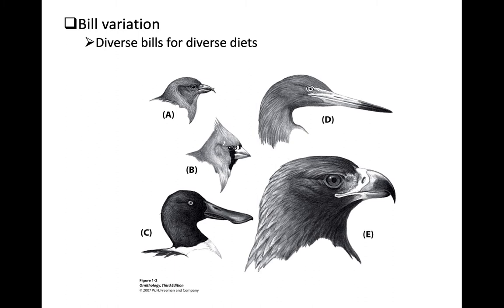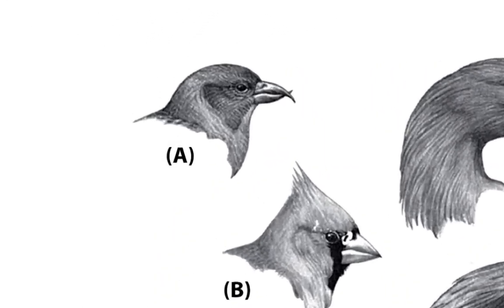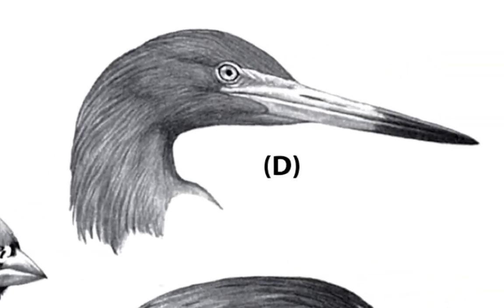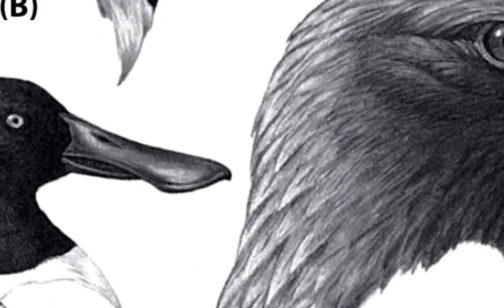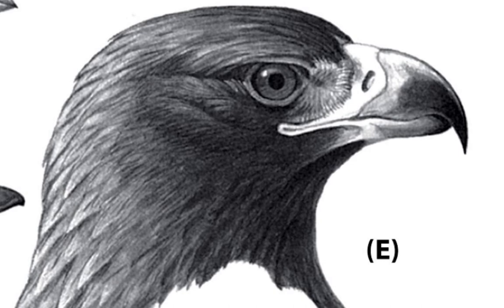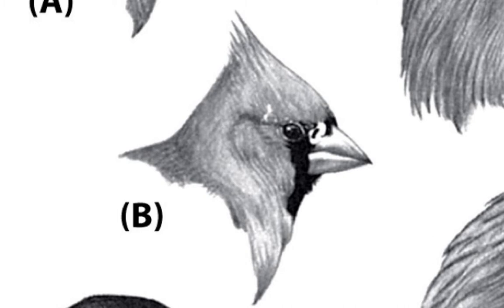There's a huge diversity of bill shapes and sizes in birds, associated with their diverse diets. Looking at examples: a crossbill, a finch adapted to foraging on green conifer cones; a spearing bill associated with something like an egret or a heron; a spoon-like bill in a spoonbill; a meat-tearing bill like in an eagle; and a seed-crushing bill as you'd see in a cardinal. When you see a bill with a really broad base, that's an indication it's got a lot of muscles attached to it, providing a lot of crushing force.